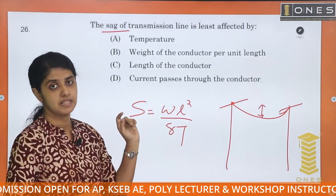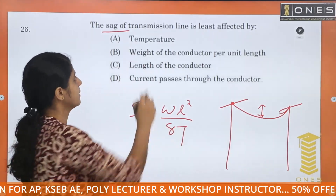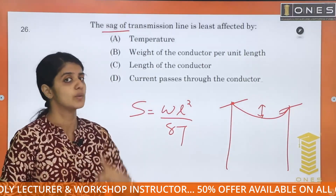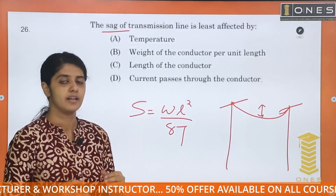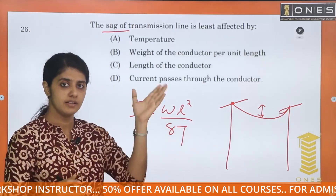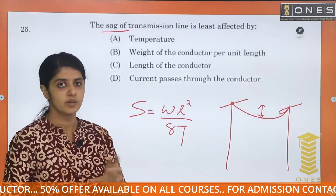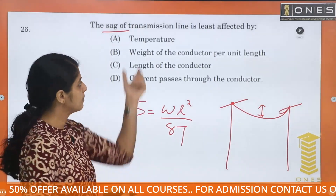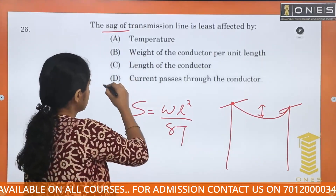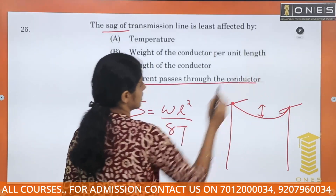SAG depends on temperature. SAG is greatest in the summer season because the conductor is expanding. Length of conductor and SAG both depend on temperature. The factor least affecting SAG is the current passing through the conductor.